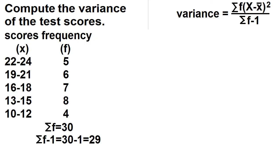Let's add a column for class mark. The class mark is just the midpoint of the class interval. Just add the lower limit and the upper limit and divide the sum by 2.